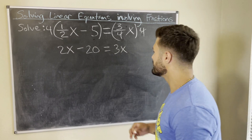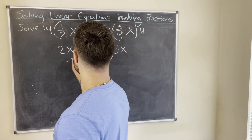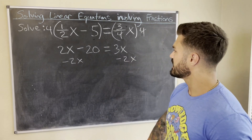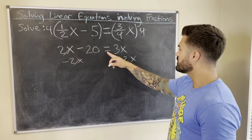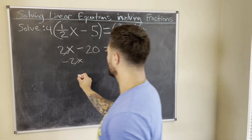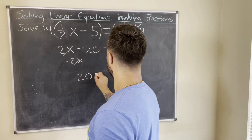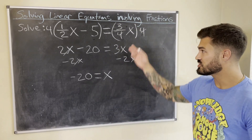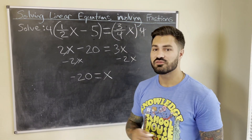Now we just solve this linear equation, which looks a lot better than what we started with. I'm going to subtract 2x from both sides: those cancel, leaving negative 20 equals 3x minus 2x, which gives us just x. So the solution to this linear equation is x equals negative 20.